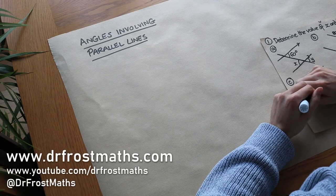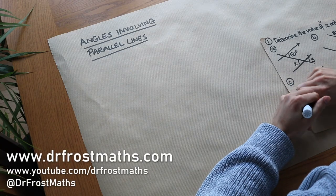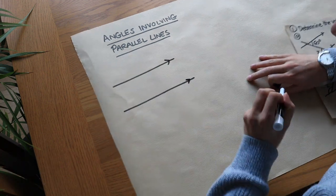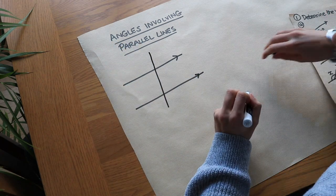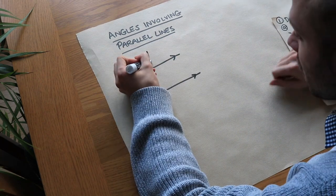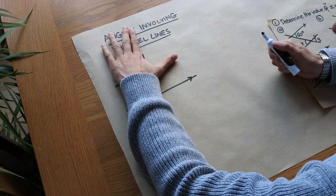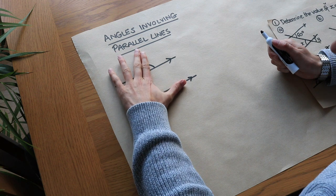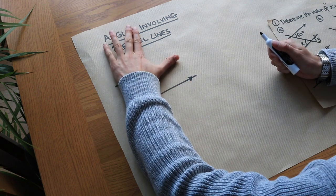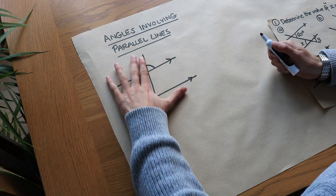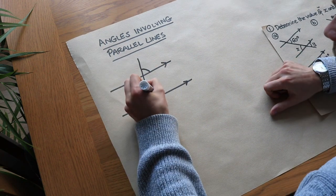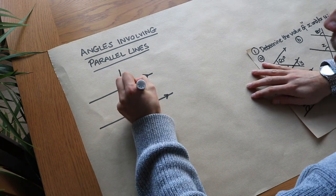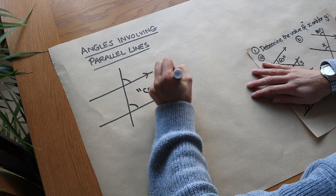Hello and welcome to this video on angles involving parallel lines. If we draw two parallel lines — marked with arrows — and connect them with another line, we can mark an angle at the top and shift our hand down to the other parallel line. You can see it's the same angle. These are known as corresponding angles, and corresponding angles are equal.